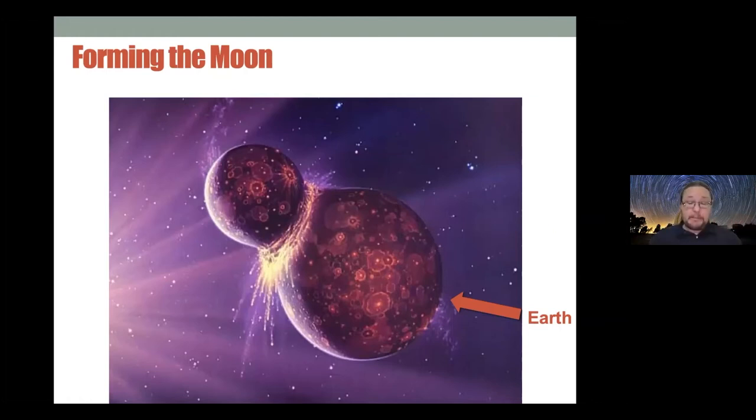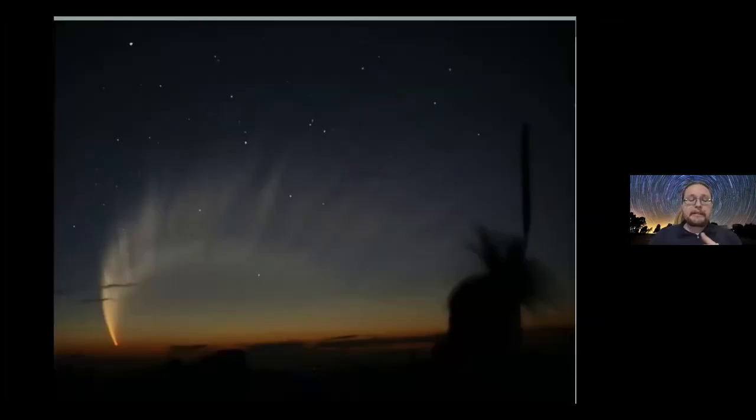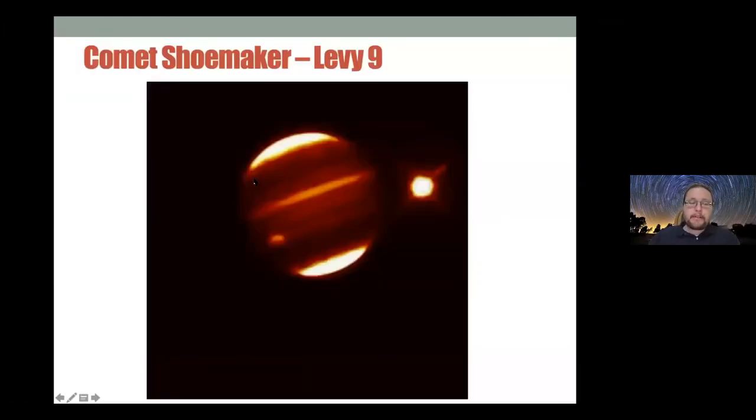But we've seen similar kind of impacts recently. If you recognize this, this is a comet. This is Comet McNaught, sometimes called the Christmas Comets. We had a beautiful view of it about a decade ago here in Australia. These comets are essentially kind of like dirty snowballs. They're bits of rock and ice lumped together. They're a couple kilometers wide. In 1994, a particular comet called Shoemaker-Levy 9 crashed into Jupiter.